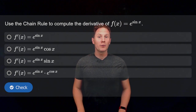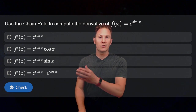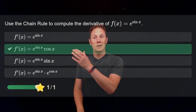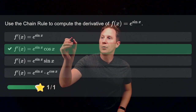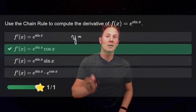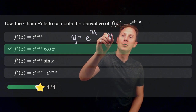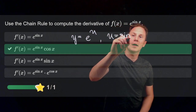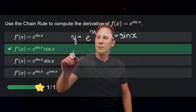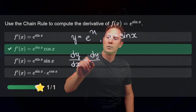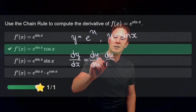Now let's solve some problems. Use the chain rule to compute the derivative of f of x equals e to the sine of x. The answer is e to the sine of x times the cosine of x. We can compute this derivative using Leibniz notation, writing y equals e to the u with u being the sine of x. Then the derivative we are after, dy over dx, according to the chain rule is dy over du times du over dx.